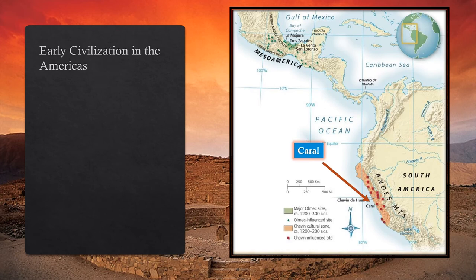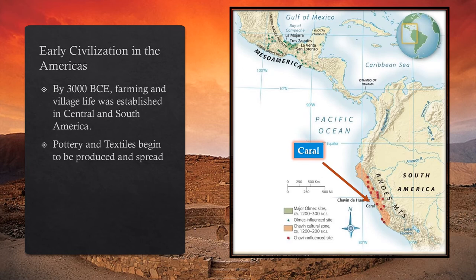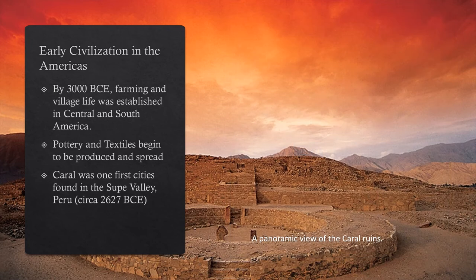By around 3000 BCE, farming and village life was firmly established in parts of Central and South America. The earliest known pottery dates from the Andean coast, and by around 1800 BCE, pottery making had spread to Central and Southern Mexico. Cotton textiles and clothing dating to around 3000 BCE have been found along the coasts of Ecuador and Peru. Eventually the agricultural revolution in the Americas would lead to cities and civilizations, just as it had in the Old World. One of the oldest cities detected was in the Caral or Supe River Valley in Peru, where pyramid-shaped temples, plazas, and a wide variety of dwellings have been unearthed, carbon dated to flourishing around 2600–2700 BCE — contemporary with the early Mesopotamian cities and the Great Pyramids in Egypt.